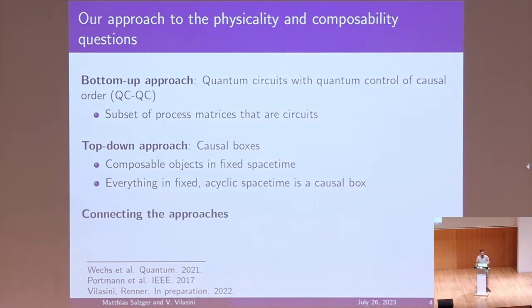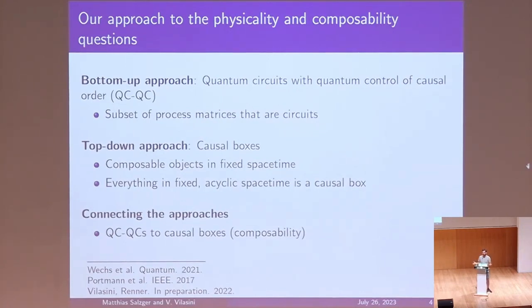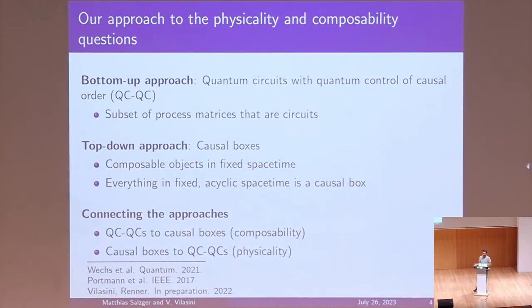What we did is connect these two approaches. We took these QCQCs and mapped them to causal boxes, which allows us to answer the composability question: whenever we have two QCQCs and want to compose them, instead of doing this in the QCQC framework — which is generally not possible — we map them to causal boxes and compose them there. We also mapped causal boxes to QCQCs, which allows us to answer the physicality question, because since this mapping exists, only QCQCs are physical in fixed acyclic spacetime.